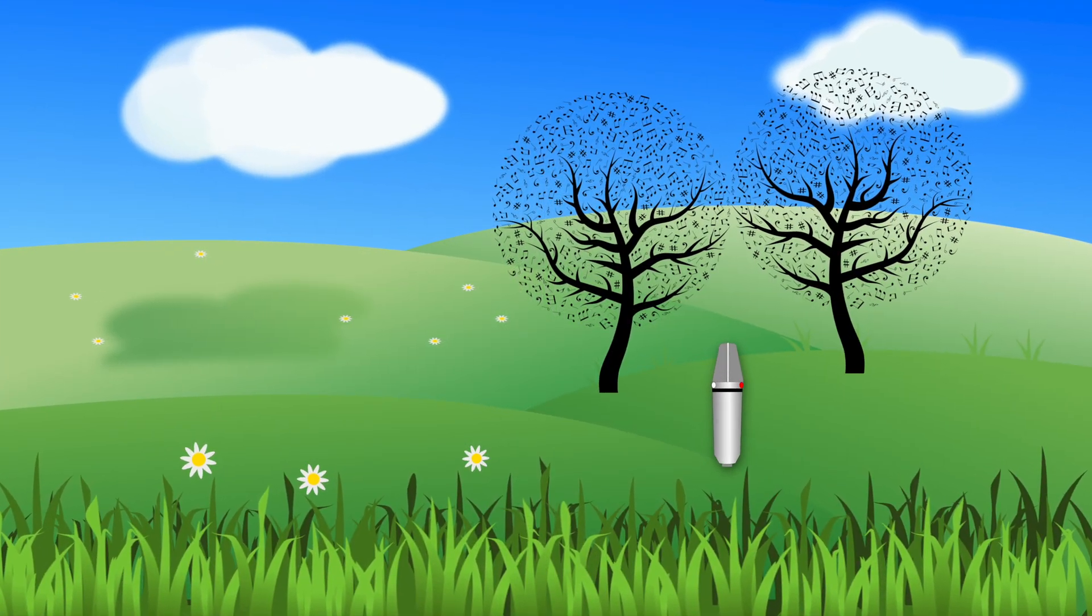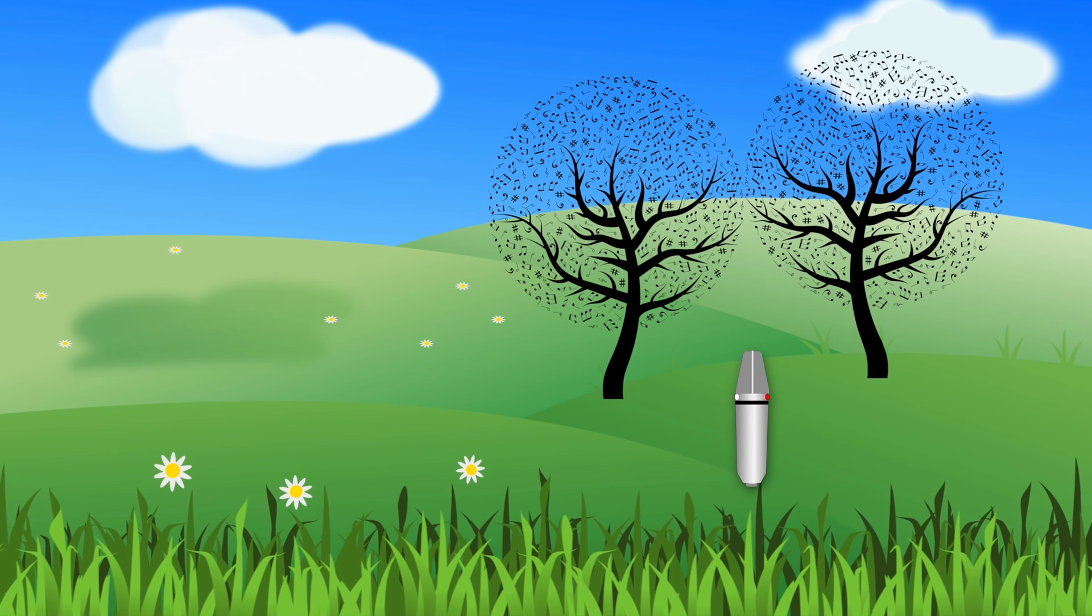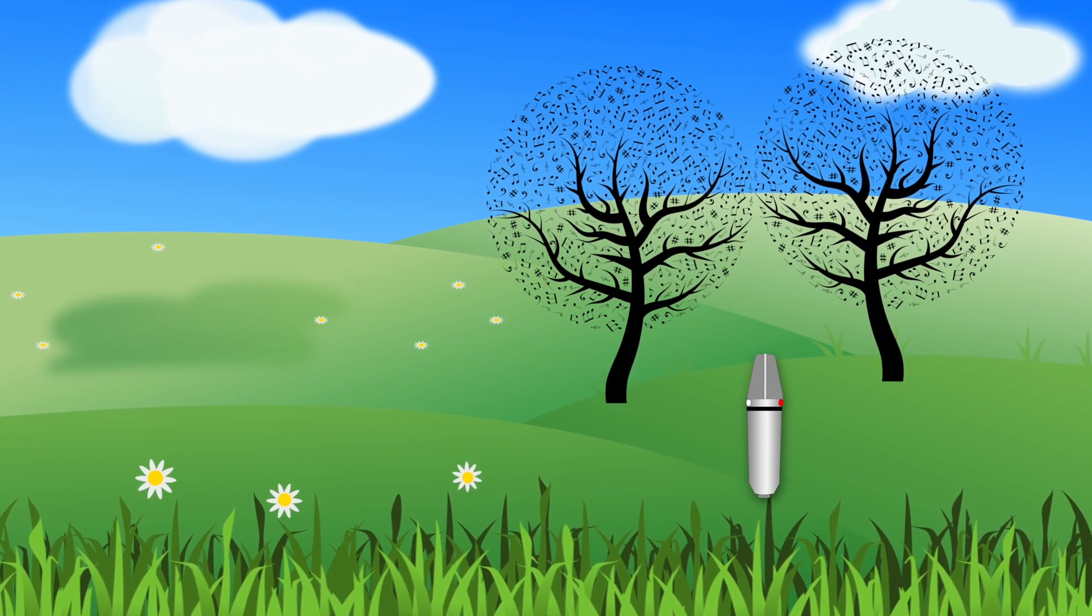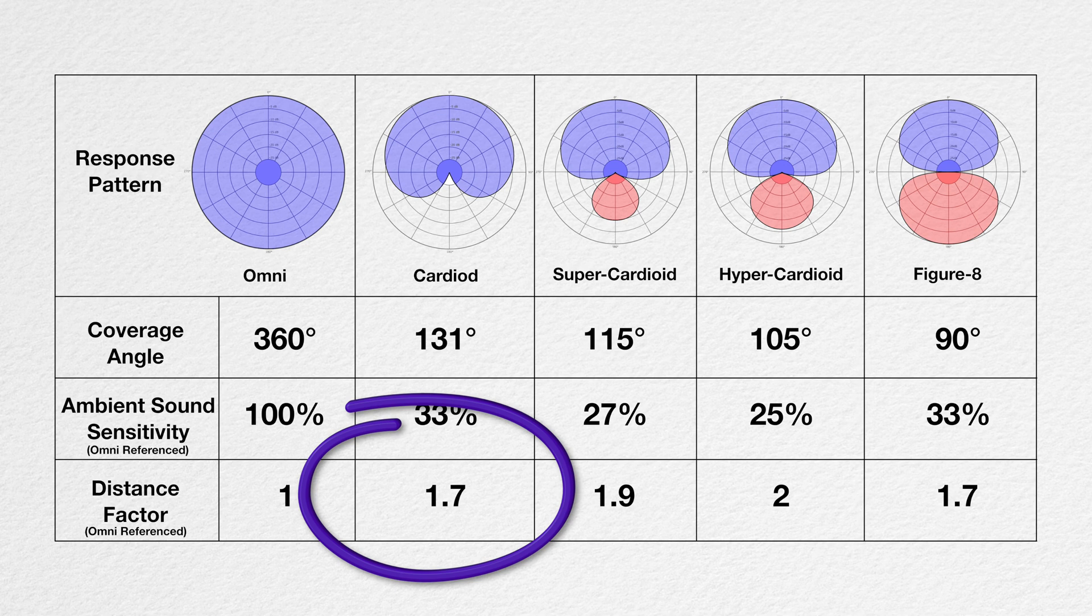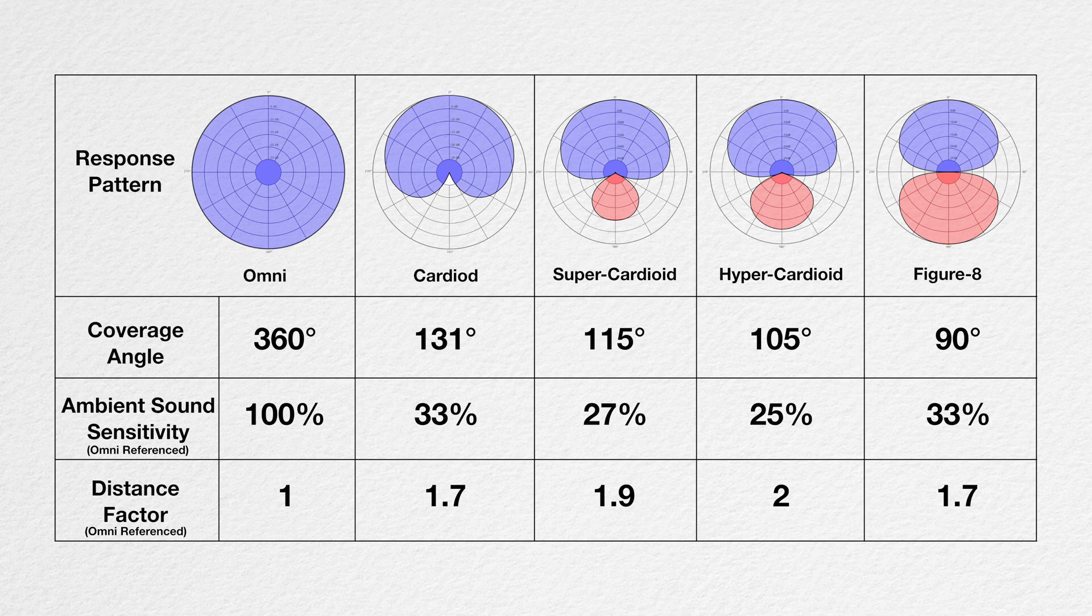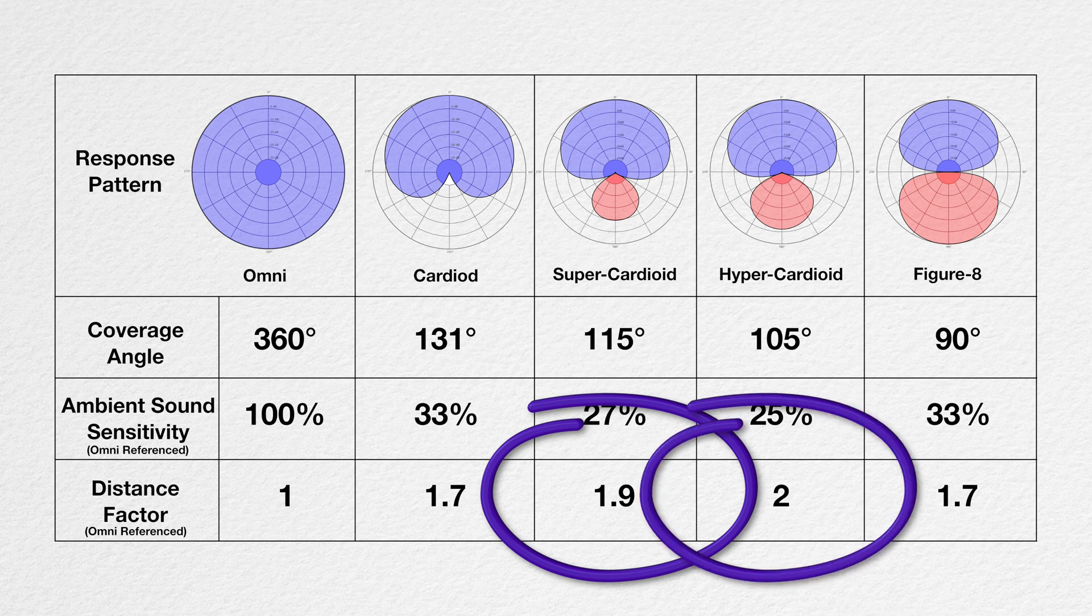There's one thing we can do to change the distance factor with everything else staying the same. We can change the microphone pattern. It turns out that a cardioid response has 1.7 times the distance factor as an omni microphone, which then brings us to the hypercardioid and supercardioid. Supercardioid has a distance factor of 1.9 and hypercardioid of 2.0.